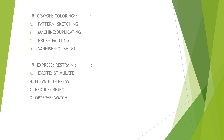Letter D: observe is to watch. This pair does not exhibit the same relationship as the given analogy. Observe and watch are related in terms of observation but do not represent opposites like express and restrain. None of the options directly correspond to the relationship. You have to choose — you cannot leave your answer sheet blank. Letter A is not the opposite. Letters B and C are opposites, so you can choose from those.